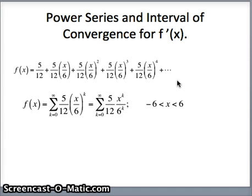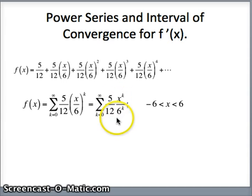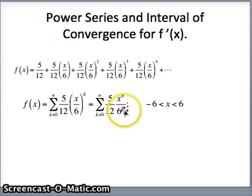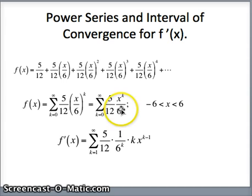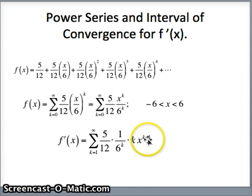Now we'd like to rewrite this to help us take the derivative. x/6 to the k is x to the k over 6 to the k. If we are going to take the derivative of this series, we take the derivative of each term. The variable is x, so the derivative of x to the k is k times x to the k minus 1, while 6 to the k stays in the denominator. So we get the sum of 5/12 times 1 over 6 to the k times k times x to the k minus 1, and we've constructed a series for f prime of x.